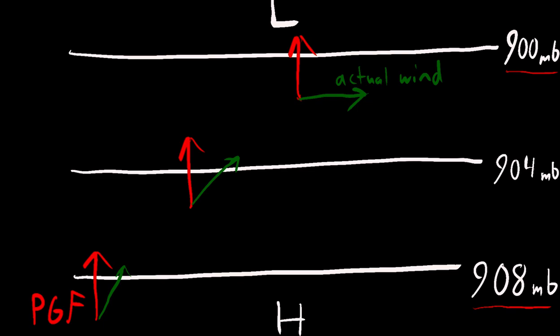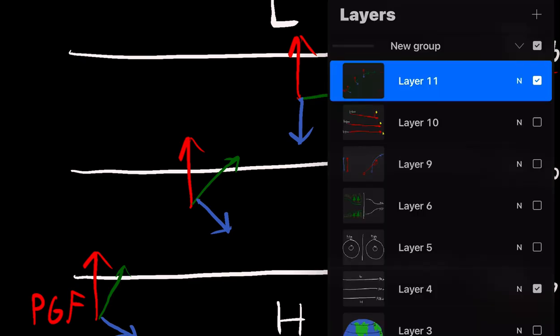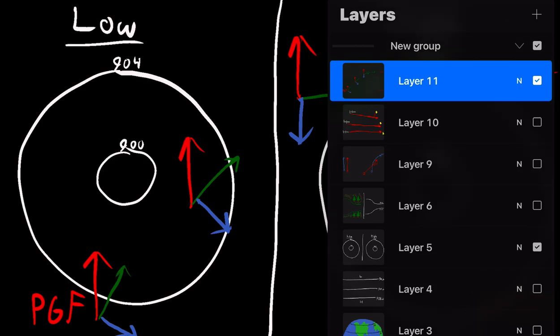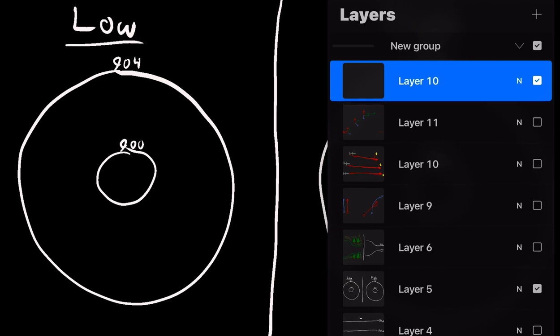This is the actual wind, and this happens because of the Coriolis force. Let's take the bottom one, closest to 908 millibars. If our wind was going straight high to low, the Coriolis force is going to come in and turn it slightly to the right, then turn it a little bit more, until it's actually flowing parallel to our isobars. This is what you would call a geostrophic wind. It's not exactly perfect in the atmosphere because there are lots of different things going on, but it's a pretty good approximation.